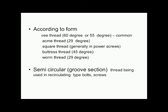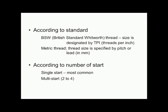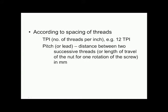Threads can also be classified depending on whether they are full-circle or semi-circular; semi-circular threads are used in circulating-type bolts and screws. According to the standard, whether they are BSW (British Standard Whitworth) or metric threads. According to the number of starts — single start, double start, or multi-start. According to spacing, we can say TPI (threads per inch), whether 6 TPI or 12 TPI. Pitch is the distance between two successive threads or length of travel of the nut for one rotation of the screw — for example, 1 mm, 2 mm, or 3 mm pitch.